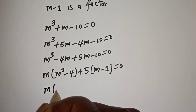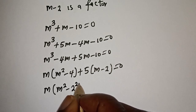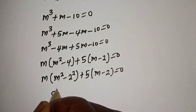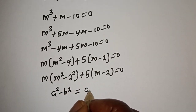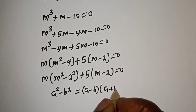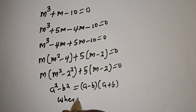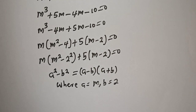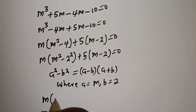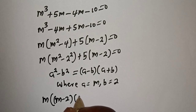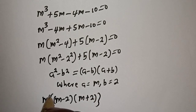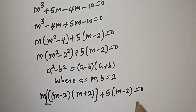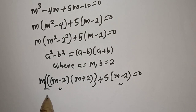Now, this is m bracket m squared minus 4, where m squared minus 4 is equal to m plus 2 times m minus 2, plus 5 bracket m minus 2, is equal to 0. So we have m times m minus 2 times m plus 2, plus 5 times m minus 2, equals 0. Notice that m minus 2 is common here — let's bring it out.